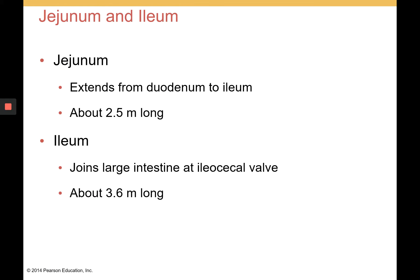The jejunum and ileum are the next two parts of the small intestine. The jejunum extends from the duodenum to the ileum, and then the ileum extends from the jejunum all the way to the ileocecal valve, which meets the cecum — the first part of the large intestine.